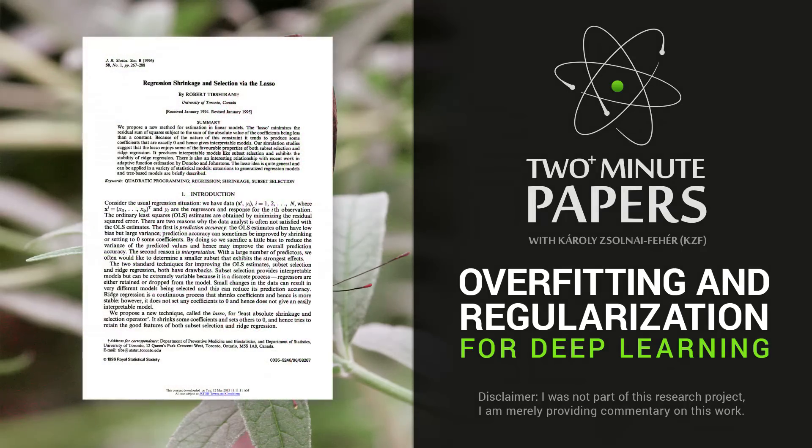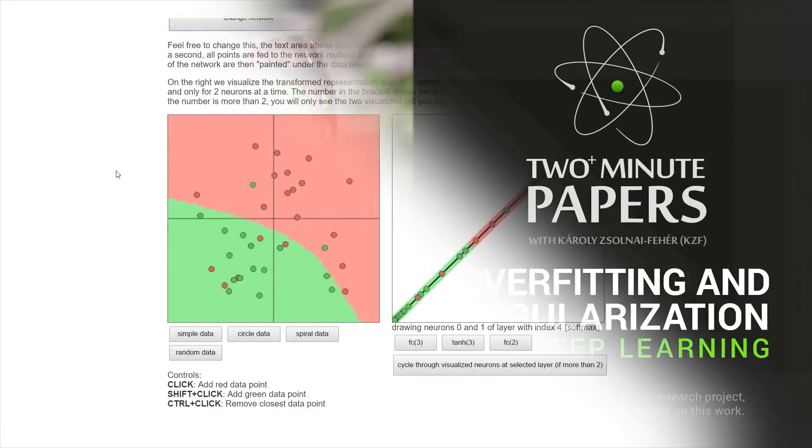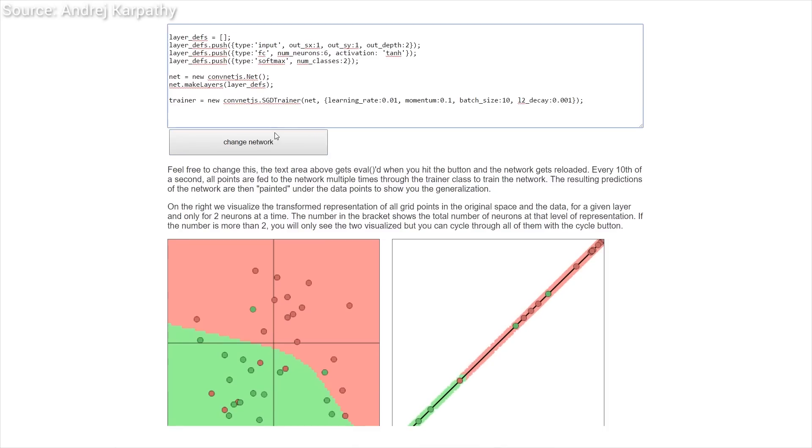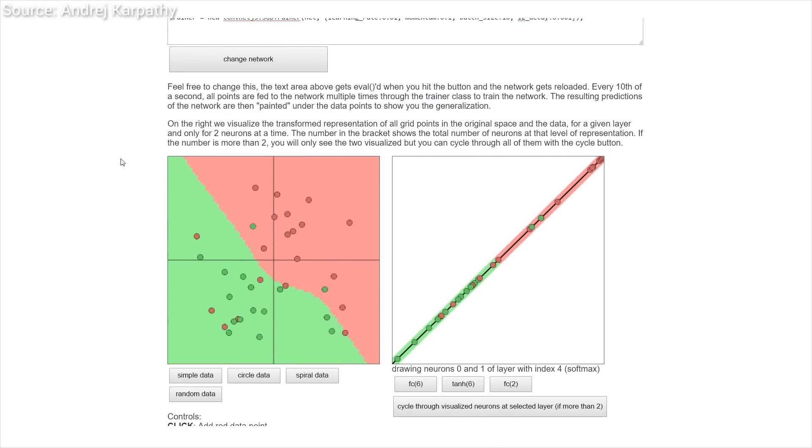Dear Fellow Scholars, this is Two Minute Papers with Károly Zsolnai-Fehér. In machine learning, we often encounter classification problems where we have to decide whether an image depicts a dog or a cat. We'll have an intuitive but simplified example where we imagine that the red dots represent dogs and the green ones are the cats.